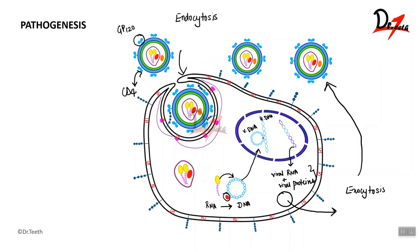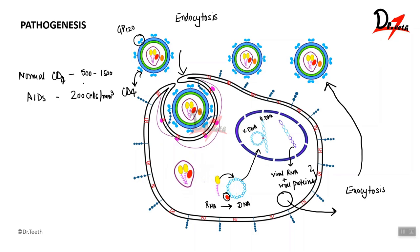In the process of replication and exocytosis, damage is caused to the host cell, meaning viral replication causes host immune cell damage and destruction. The normal number of CD4 cells or T cells inside the body is between 500 to 2500 cells per mm³. In the case of full-blown AIDS, this number falls to 200 or less than 200 cells per mm³. As viral replication increases, there is destruction and damage to the CD4 cells specifically.